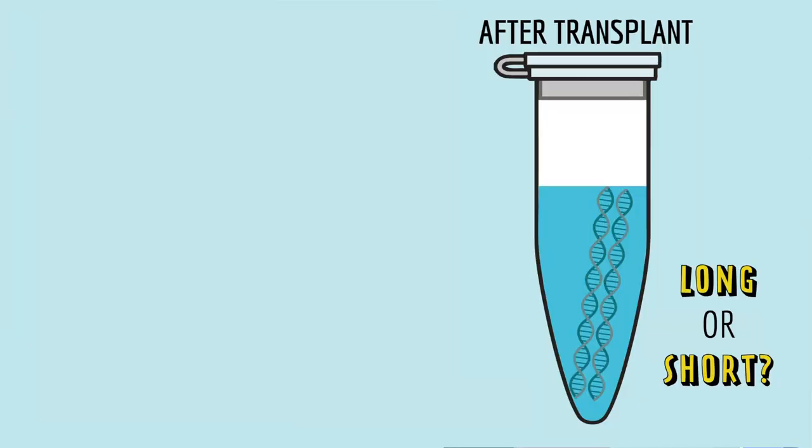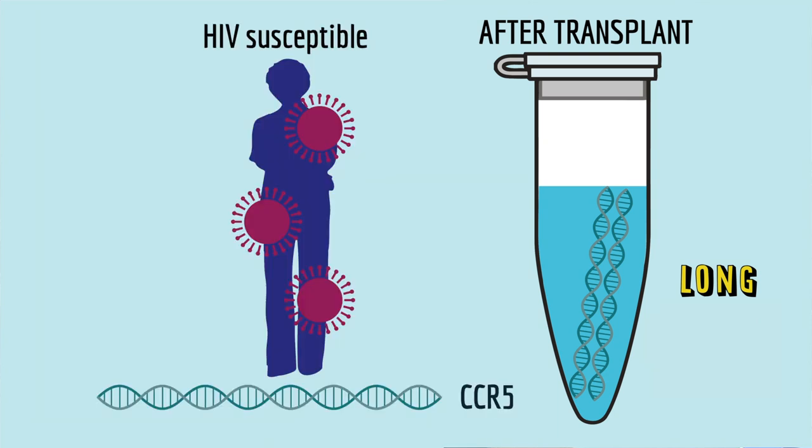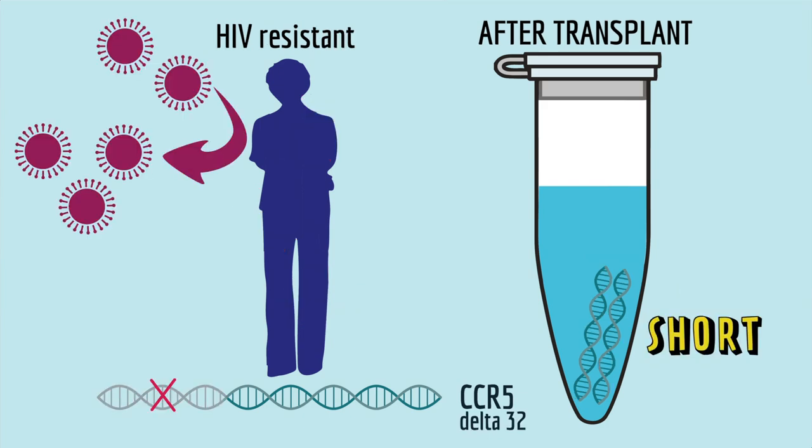And all they had to do was look in this tube after the bone marrow transplant to ask, are these pieces of DNA long or short? And if they're long, then that would mean that he got the long CCR5 variant that is sensitive to HIV. And if the pieces of DNA were short, then that would mean he got the short CCR5 variant that is resistant to HIV.